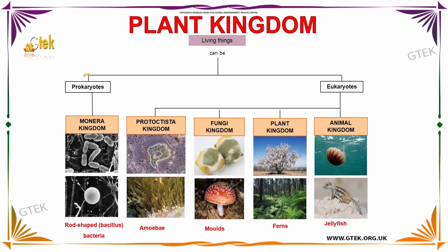Prokaryotes is subdivided into monera kingdom. The sample example for monera kingdom is rod-shaped bacteria, you can see it over here. And the eukaryote is subdivided into protactista kingdom, fungi kingdom, plant kingdom and animal kingdom. Amoeba is example for protactista kingdom and moles for fungi kingdom, ferns for plant kingdom, jellyfish for animal kingdom. You can see it over here.